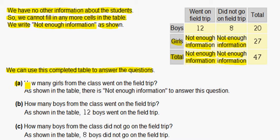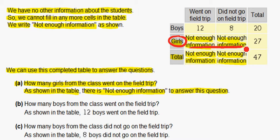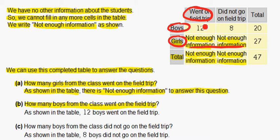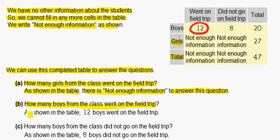In A, how many girls from the class went on the field trip? As shown in the table, there is not enough information to answer this question. For girls, we did not get enough information to answer question A. In question B, how many boys from the class went on the field trip? We see boys and went on the trip, which is 12. So as shown in the table, 12 boys went on the field trip.